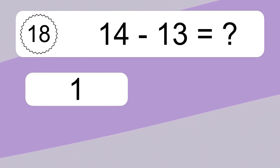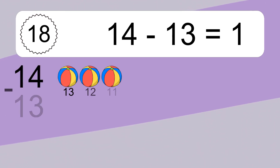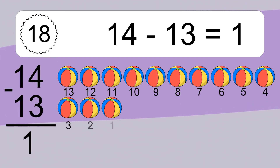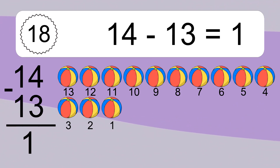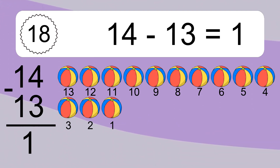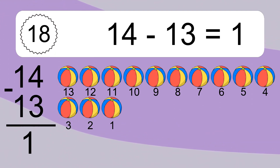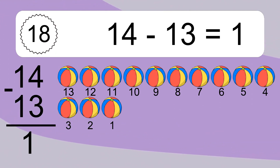14 minus 13 equals what? 14 minus 13 equals 1. Let's count it. 13, 12, 11, 10, 9, 8, 7, 6, 5, 4, 3, 2, 1.